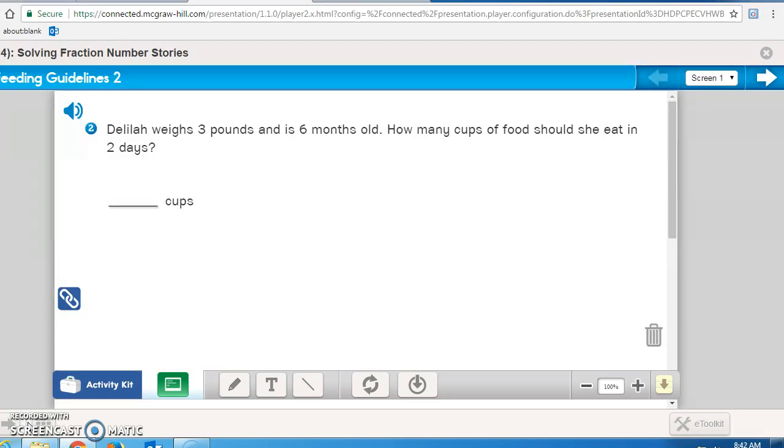Make sure you checked in with me on math journal page 306, because math journal page 307 is an ACI, an assessment check-in. And if you understood how to do number 1, page 307 should be easier for you.